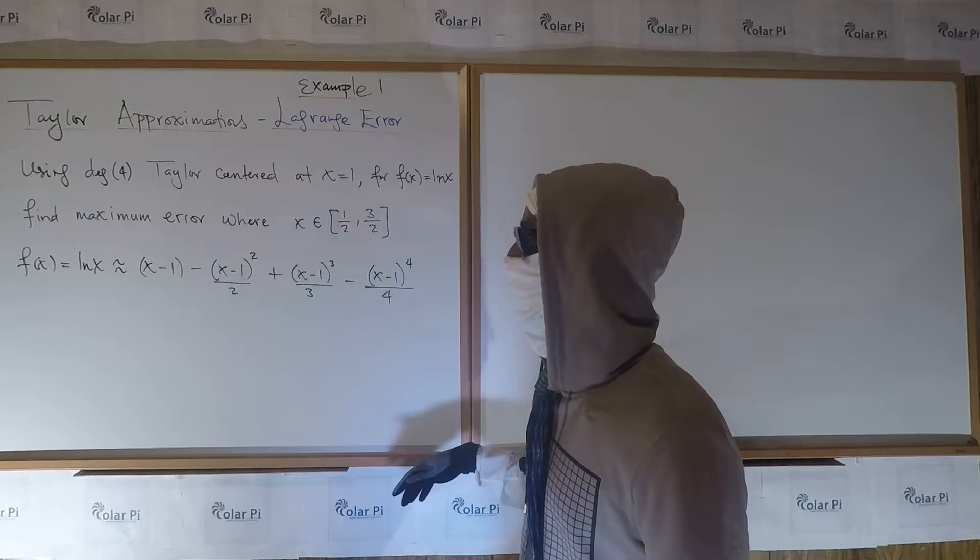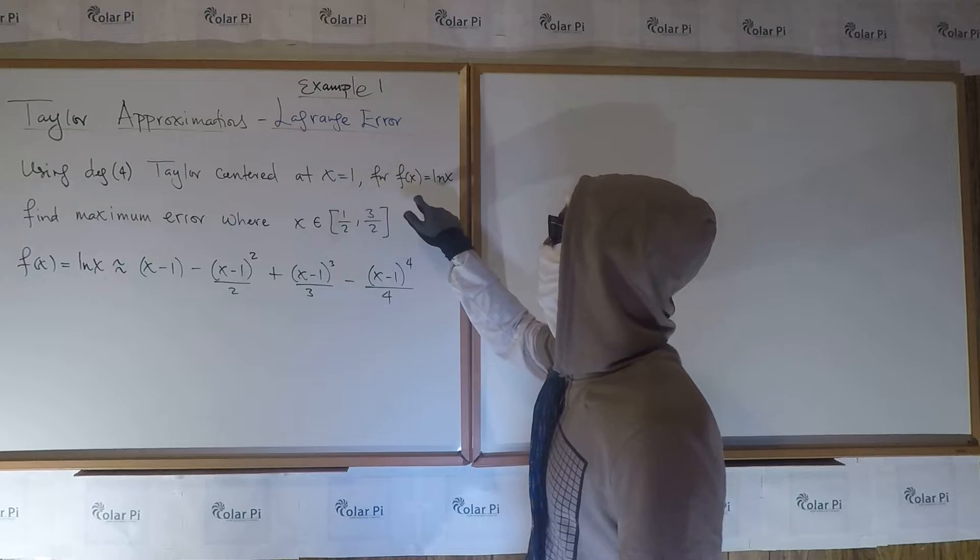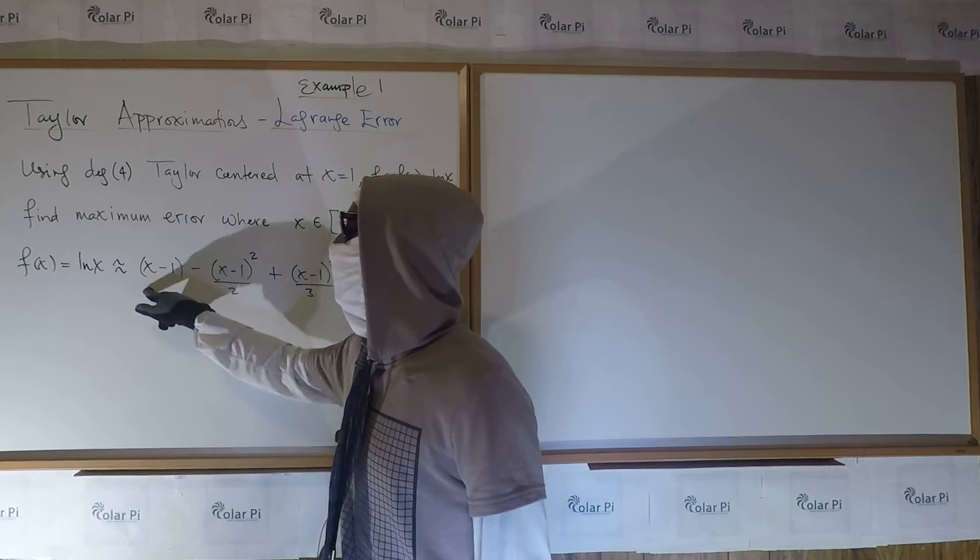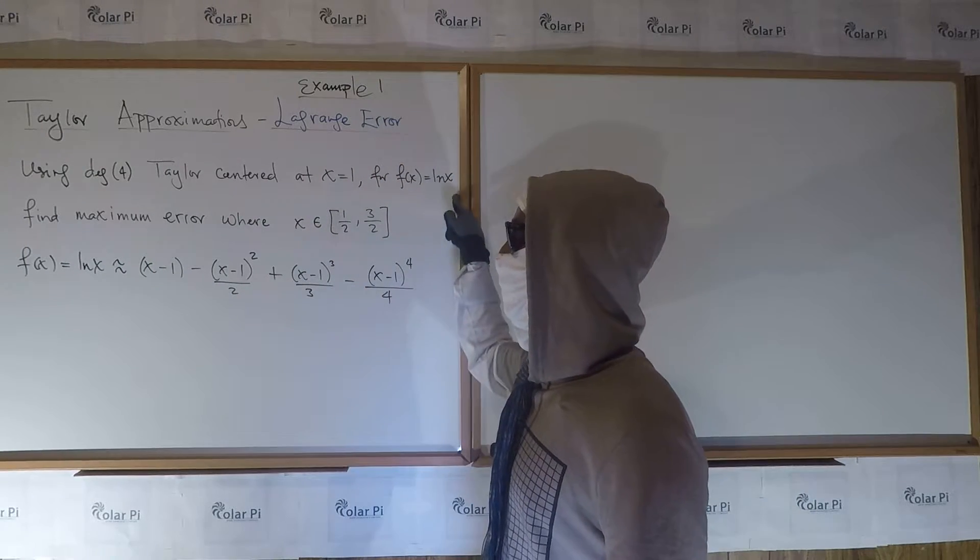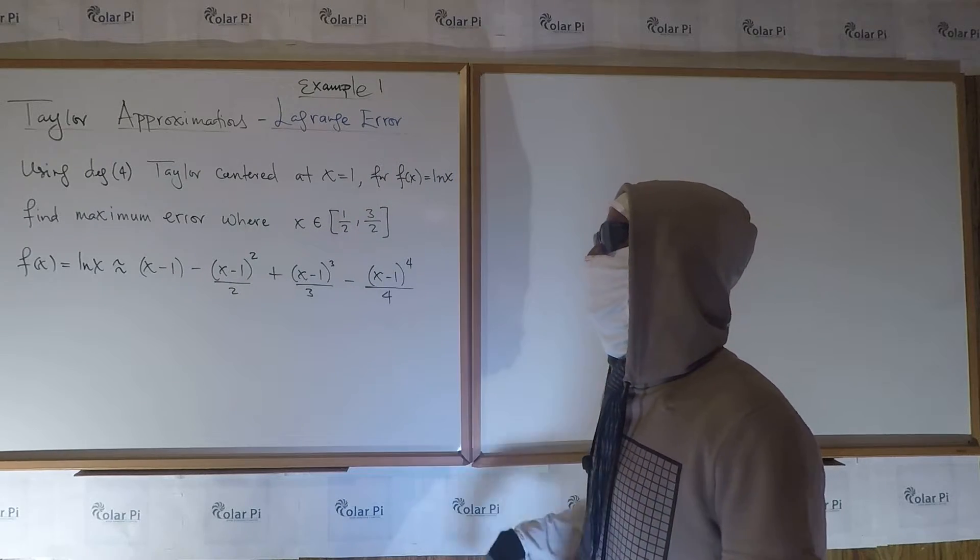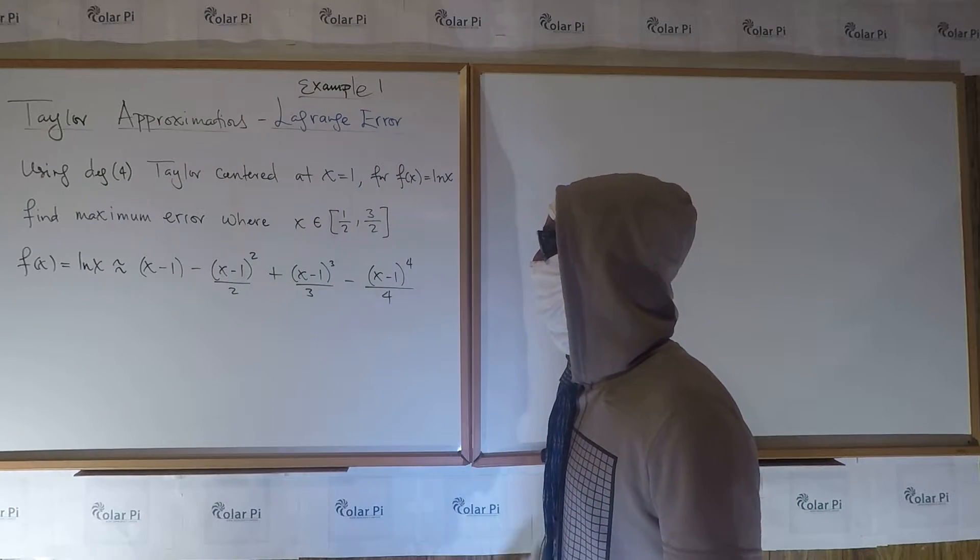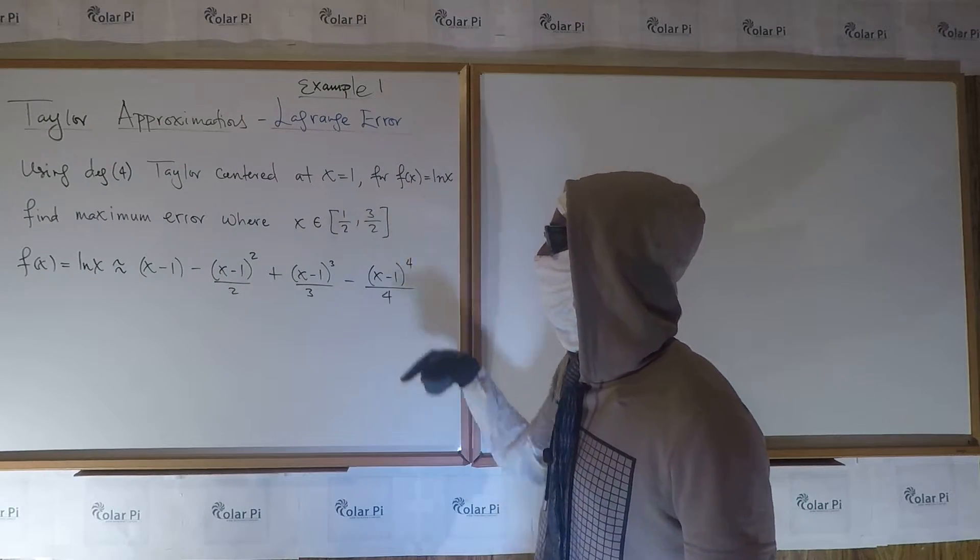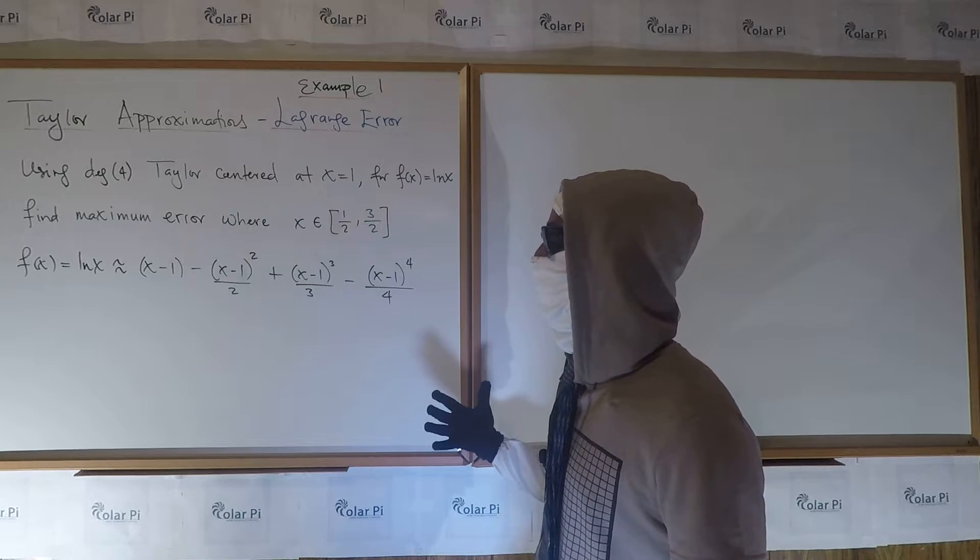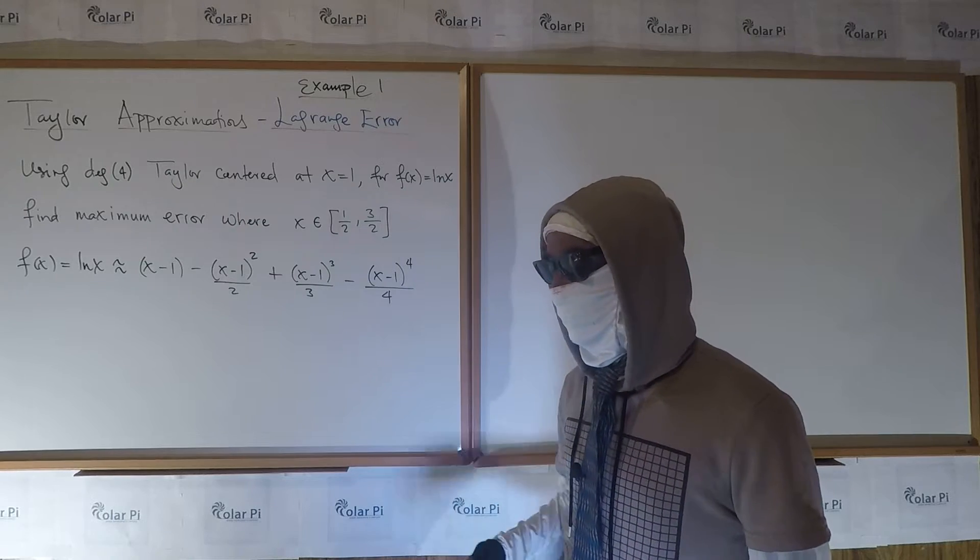So our example is going to be using the fourth degree Taylor polynomial centered at x equals one for ln of x, which is this here. We're going to estimate ln of x. So in place of ln of x, we're going to use this polynomial, which represents ln of x through the Taylor polynomial of degree four centered at one. And for x's in here, we're going to find what the biggest error we could get would be when we use this in place of the actual function.